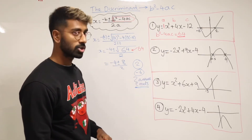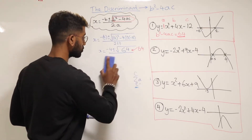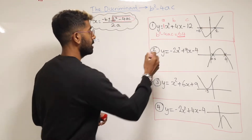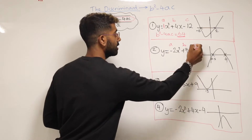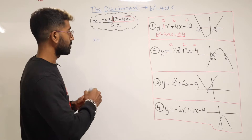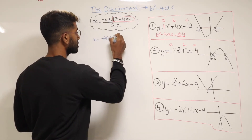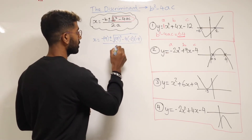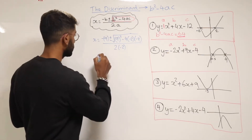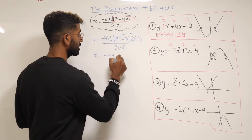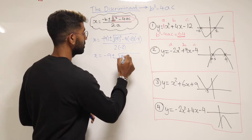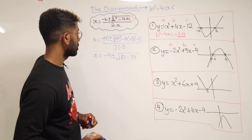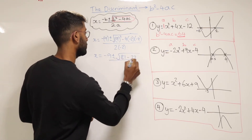Now let's do the same with number two. For this one, a equals minus 2, b equals 9, and c equals minus 4. Filling out the quadratic formula: minus 9 plus or minus the square root of 9 squared minus 4 lots of minus 2 times by minus 4, all over 2 lots of minus 2. Simplifying: 9 squared is 81, minus 4 times 2 is 8, times 4 is 32. Divide by minus 4.